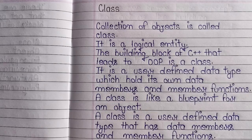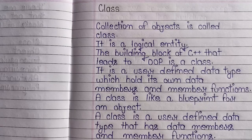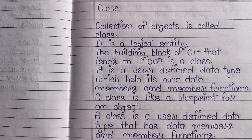आप जब भी कोई class create करोगे, तो आप class keyword का use करोगे, नहीं तो आप class declare नहीं कर पाओगे. Class में आप direct value pass नहीं कर सकते, class को आप एक ही बार declare कर सकते हो, class के लिए कभी भी memory allocate नहीं होती. Object के लिए class एक blueprint की तरह काम करती है. Class एक user-defined data type है जिसमें data members और member functions होते हैं.